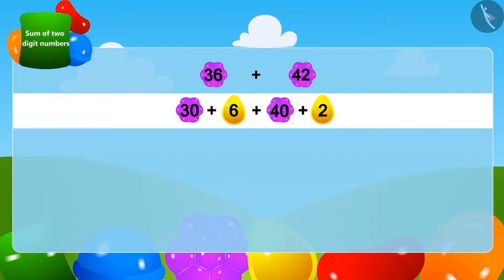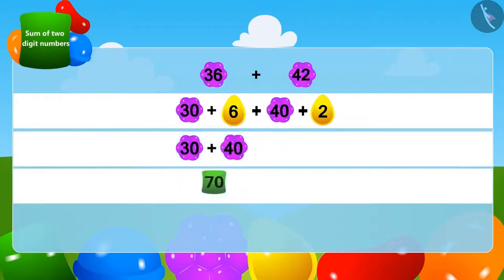We will now write the two-digit numbers together and add them. Add 30 to 40 and we get 70. We will write the one-digit numbers together and add them. Add 2 to 6 and we get 8.